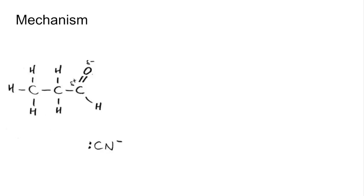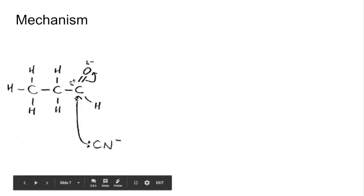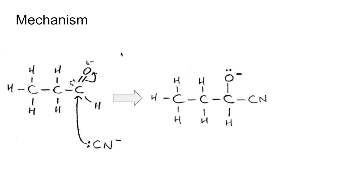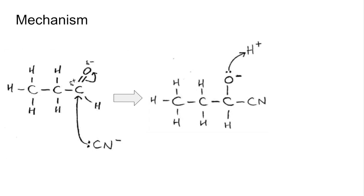The mechanism for this reaction: propanal is drawn with the cyanide ion showing the lone pair — very similar to before. The pair of electrons from the nucleophile is attracted to the slightly positive carbon, repelling the pi electron pair onto the oxygen to give an intermediate. Because we're using HCN, we then need an H⁺ ion — a bond forms between the oxygen lone pair and the H⁺, giving the final hydroxynitrile product.